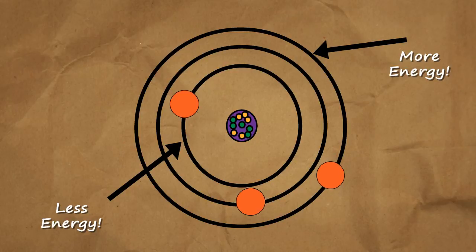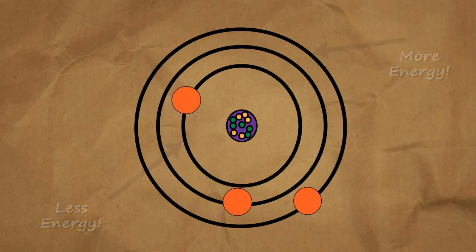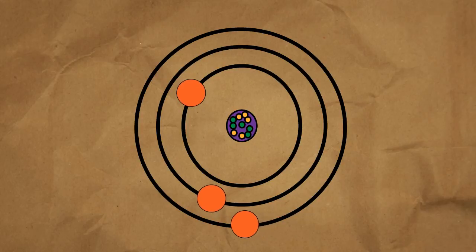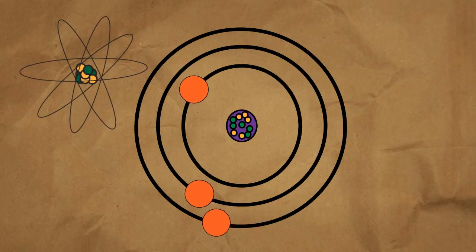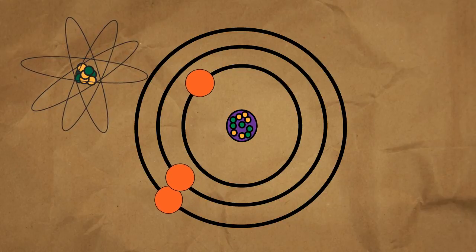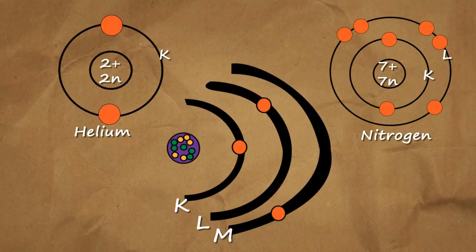Think of the arrangement of electron orbitals around the nucleus as energy levels. They can be depicted as two-dimensional rings, but keep in mind that actual electron orbitals often have complex three-dimensional shapes.